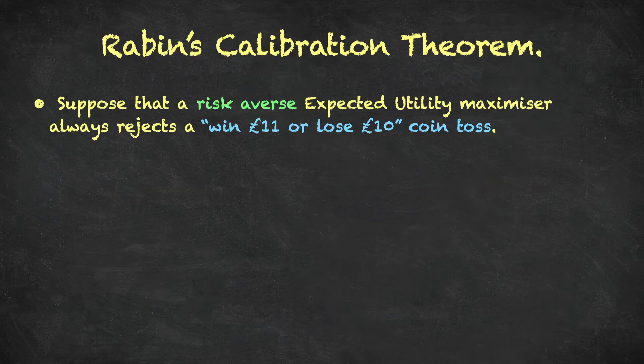Let's start by supposing that a risk-averse expected utility maximiser always rejects a small gamble of the following form: win £11 or lose £10 on the basis of a coin toss. When we say they always reject such a gamble, we mean that whatever their wealth level is — however much wealth they have — they reject this particular gamble. That is the starting point of Rabin's analysis.